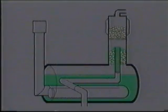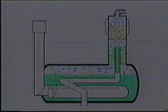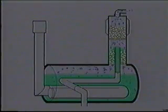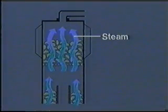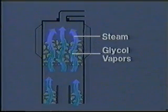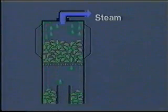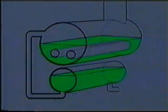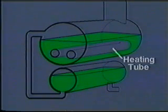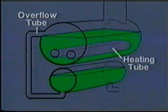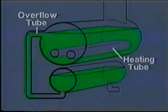As the glycol begins to heat, the water trapped by it begins to boil and moves upward through the still column as steam. Mixed with the steam will also be some hot glycol vapors. As this mixture passes upward through the still column, it comes in contact with a cooler part of the column, and the glycol vapors condense and drop back into the reboiler. The water leaves the top of the still column as steam. As this process continues, glycol in the reboiler accumulates above the heating tube until it eventually reaches the level of an overflow tube. The dried, purified glycol then spills into the overflow tube and into the surge tank once again.